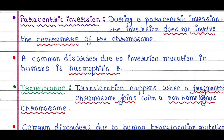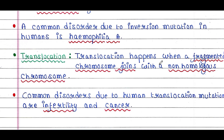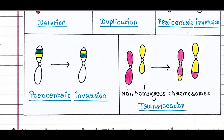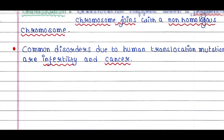Next is translocation. Translocation happens when a fragmented chromosome joins with a non-homologous chromosome. In the figure, two non-homologous chromosomes are both broken, and the fragments exchange — this part joins with that chromosome and vice versa. This is an example of reciprocal translocation. Common disorders due to translocation mutation in humans are infertility and cancer.